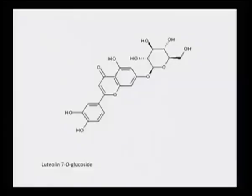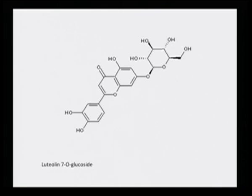Looking at one of the molecules: this is the structure of luteolin 7-O-glucoside. The glucoside is hanging on the top, the benzenoid ring has one hydroxy, and the third ring has two hydroxyl groups. These two hydroxyls are ortho to each other — very ideally suited for metal chelation. This shows how beautifully a metal, enzyme, or biomordant can chelate because it has the right kind of appendage for chelation.